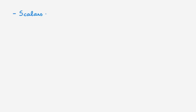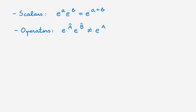Let's first look at a potential pitfall. For scalars, we can write that the product of two exponentials is equal to the exponential of the sum. What about operators? It turns out that this formula is, in general, not true for operators.